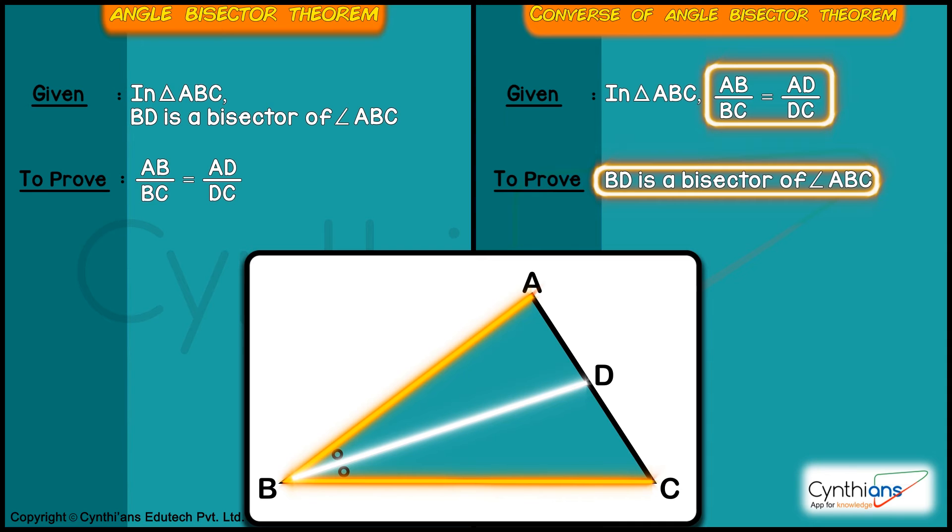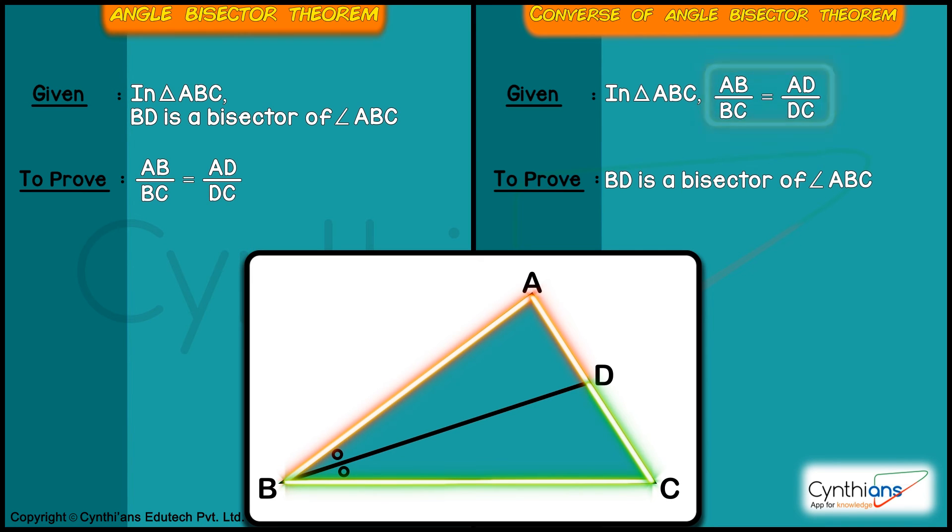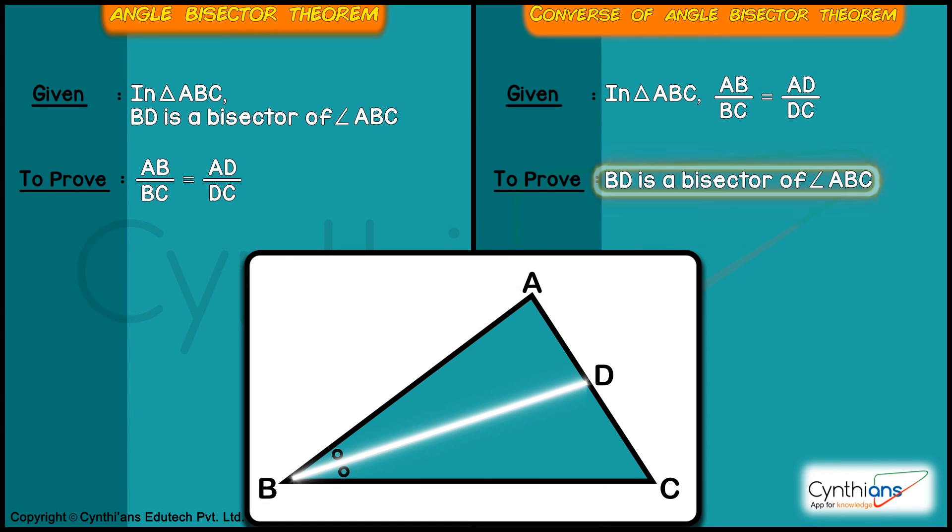Did you get it? Great. That means in certain questions, you will be given the values of these ratios. And you need to prove that these ratios like AB upon BC is equal to AD upon DC. If this is proved, then you can say that BD is bisector of angle ABC.